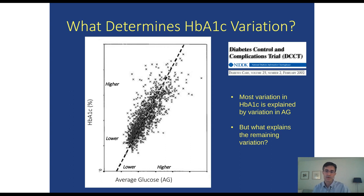Let's start by reminding ourselves why we're measuring A1c in the first place — because A1c tells us about mean glucose variation. From this plot taken from a publication related to the DCCT trial in 2002, as average glucose increases, A1c increases. So A1c tells us a great deal about a patient's recent average glucose level. However, there's quite a bit of scatter around that regression line that we can't fully explain.